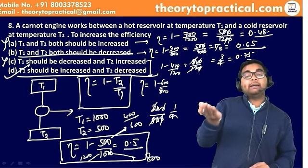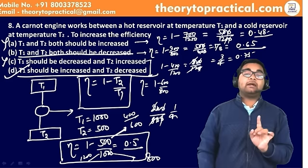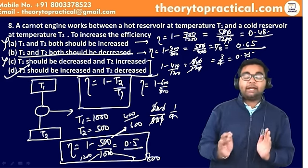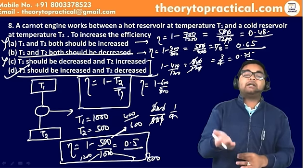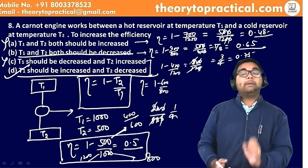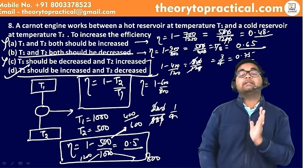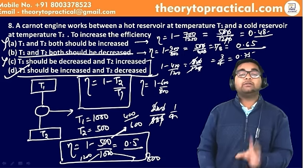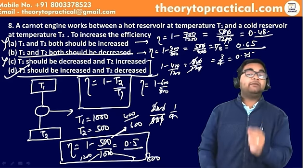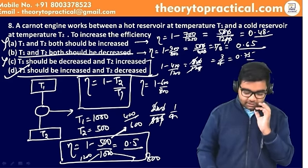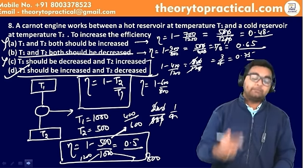ज़्यादा suitable answer option D है क्योंकि efficiency rise ज़्यादा मिलती है जब higher temperature को और high करें और lower temperature को और low करें। Strategy: ऐसे questions में एक value assume करो, options के हिसाब से calculate करो। Correct answer sure shot मिलेगा, थोड़ा time ज़्यादा लगेगा — बट वह एक mark ज़रूर मिलना चाहिए। Answer: Option D।